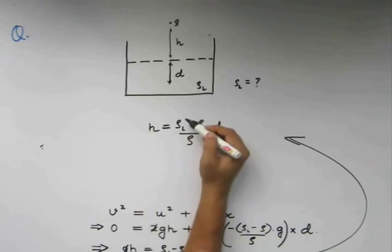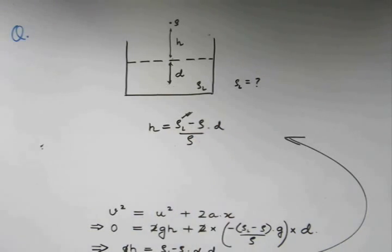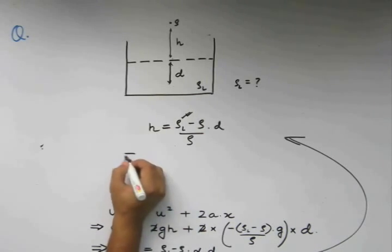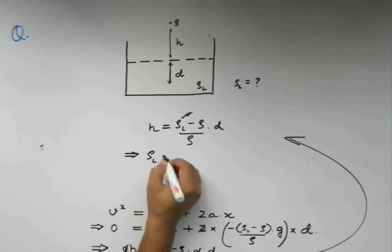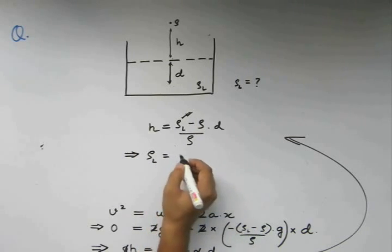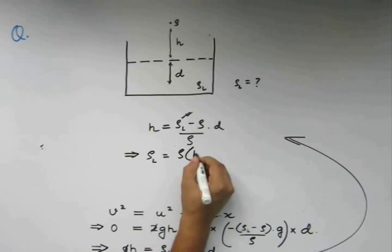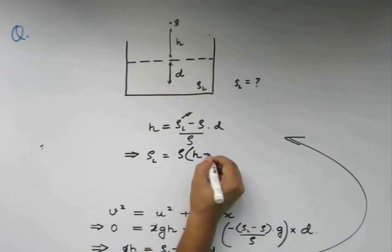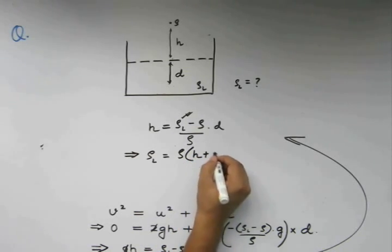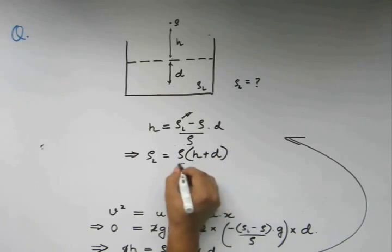Our objective is to find what rho l is. So, from this equation, we have rho l equal to rho times h plus d divided by d.